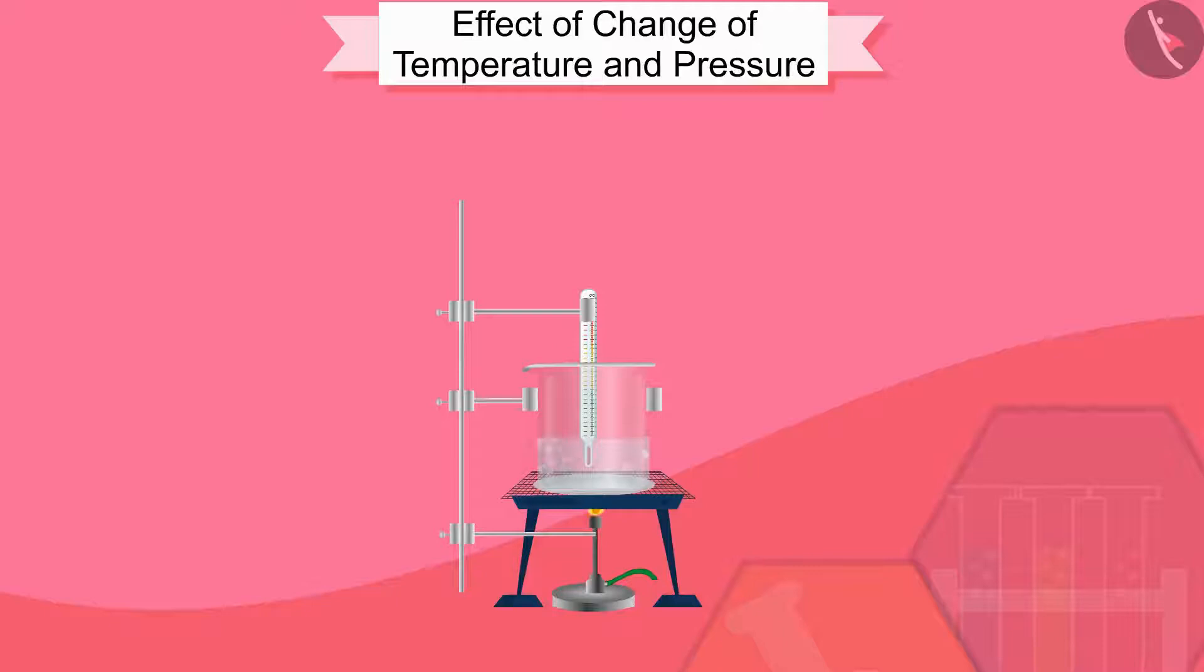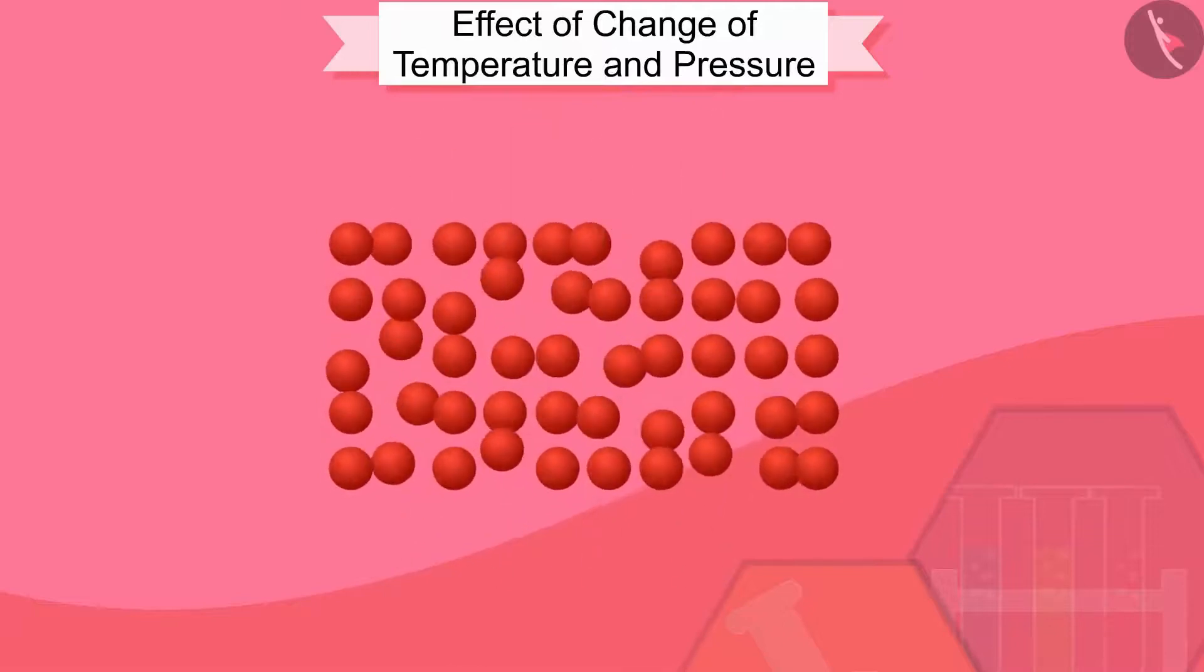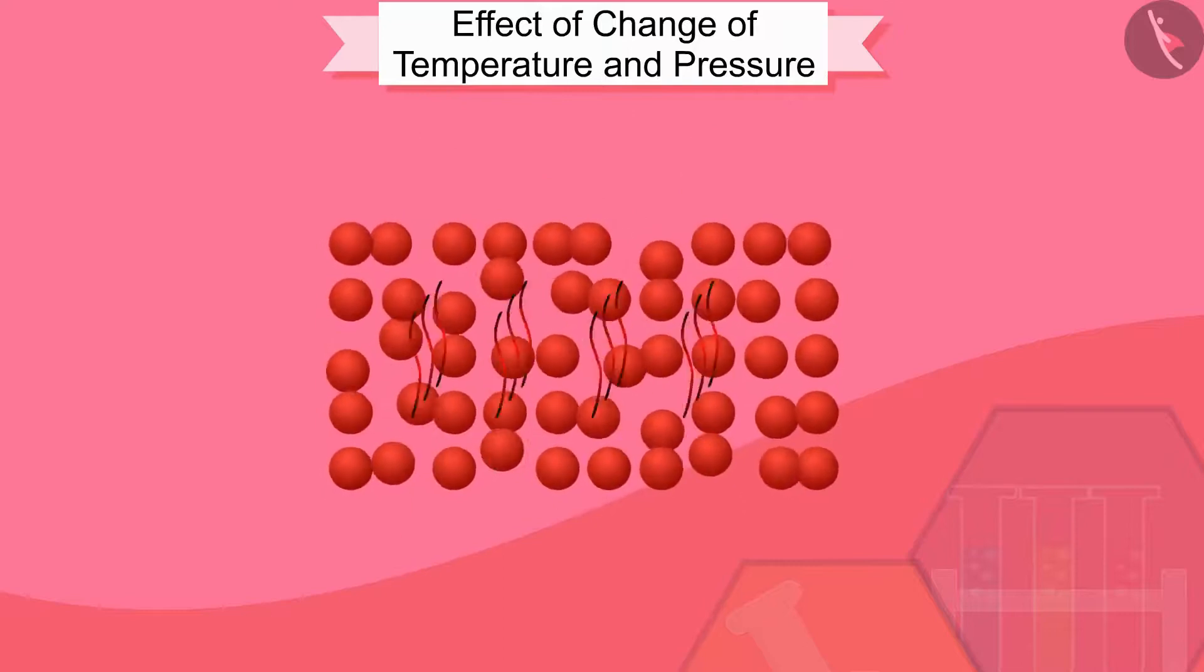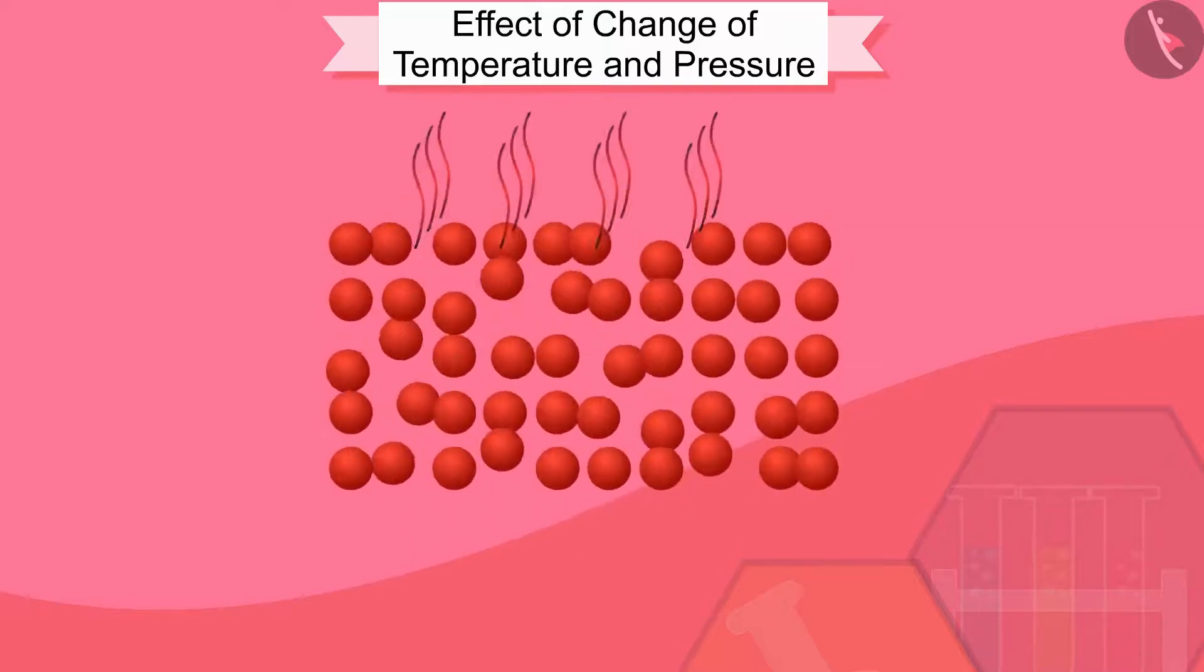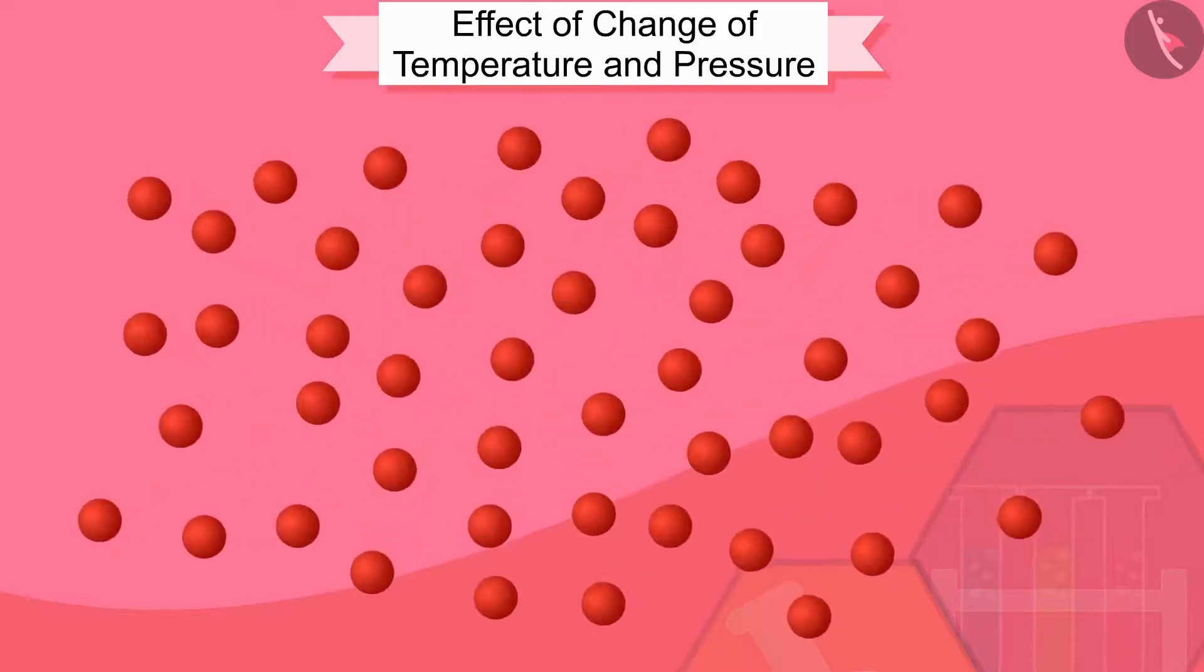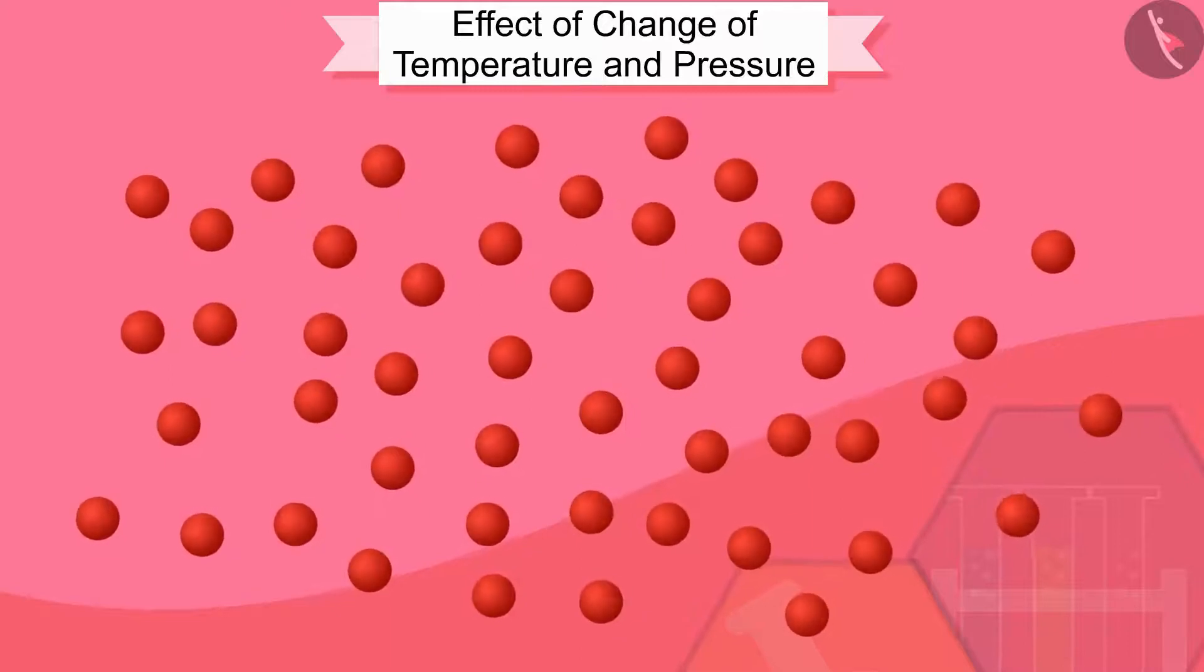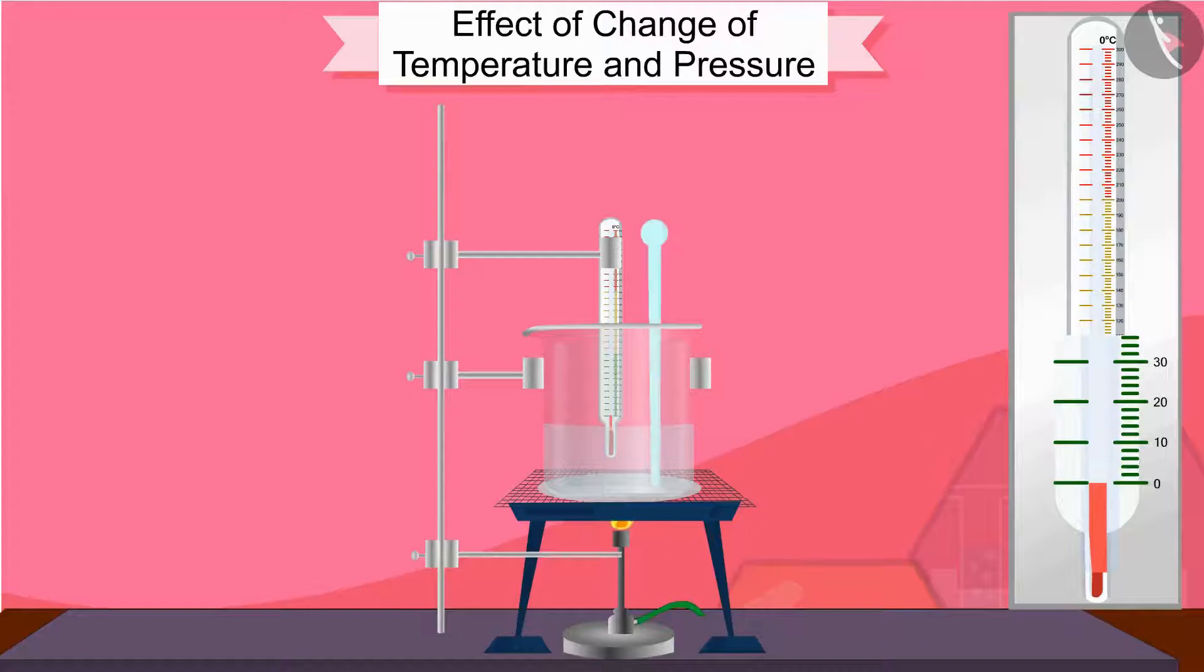Let us see what happens during the change from water to water vapor. When we supply heat energy to water, particles start moving even faster. At a certain temperature, a point is reached when the particles have enough energy to break free from the forces of attraction of each other. At this temperature, the liquid starts turning into gas.